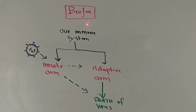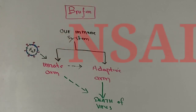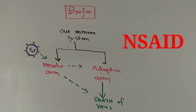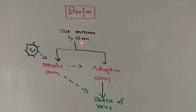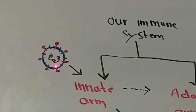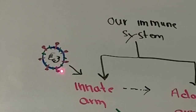Let me explain that downside on the whiteboard. If you look at this diagram, you see Brufen — this is the brand name and the generic name of the drug is ibuprofen, which is a NSAID or non-steroidal anti-inflammatory drug. This is the coronavirus; it has got RNA within the lipid bilayer. This lipid bilayer has certain proteins and glycoproteins — the red one is the spike glycoprotein or S protein.